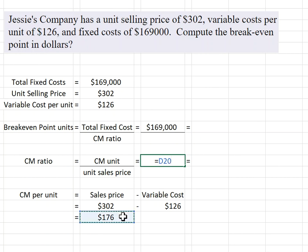Now I can calculate my contribution margin ratio pretty easily. Take the contribution margin per unit, which is $176, and divide that by my sales price of $302.